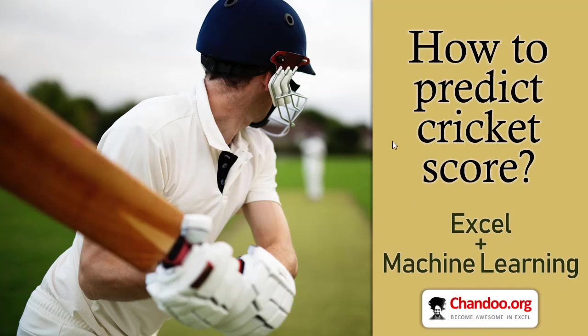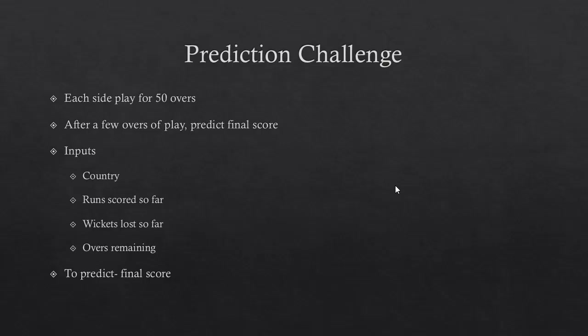The challenge here is we will start with a prediction problem, define it, and then use Excel and machine learning to solve it. In a typical one-day international cricket match, each side plays for 50 overs, each over consisting of six balls. After a team plays maybe 10 or 15 overs, we get an idea of how things are progressing and what the match conditions are, and we want to predict the final score.